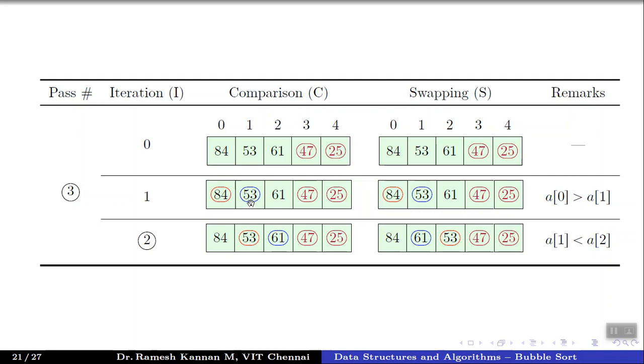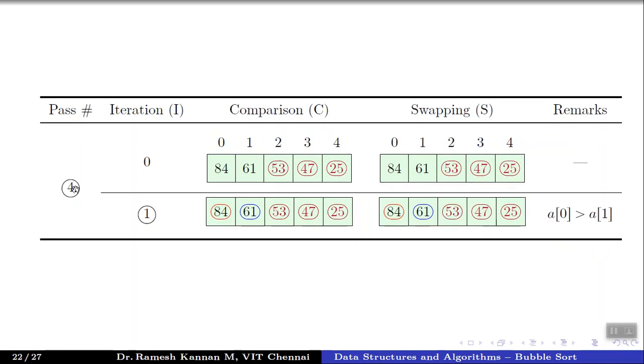In pass 3, we check: is 84 greater than 53? Yes, no swapping. Is 53 greater than 61? No, we do a swapping. The final result is 53 is marked. In the fourth pass, we only have: is 84 greater than 61? Yes, so we keep it without any swapping.